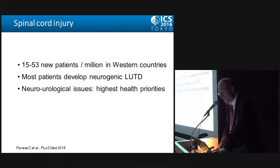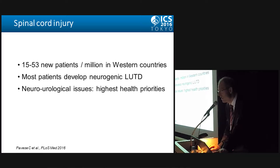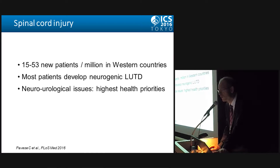There are about 15 to 53 new patients suffering from spinal cord injury per million in Western countries. Most of these patients will develop neurogenic lower urinary tract dysfunction. And be aware, the neuro-urological issues belong to the highest health priorities of these patients.